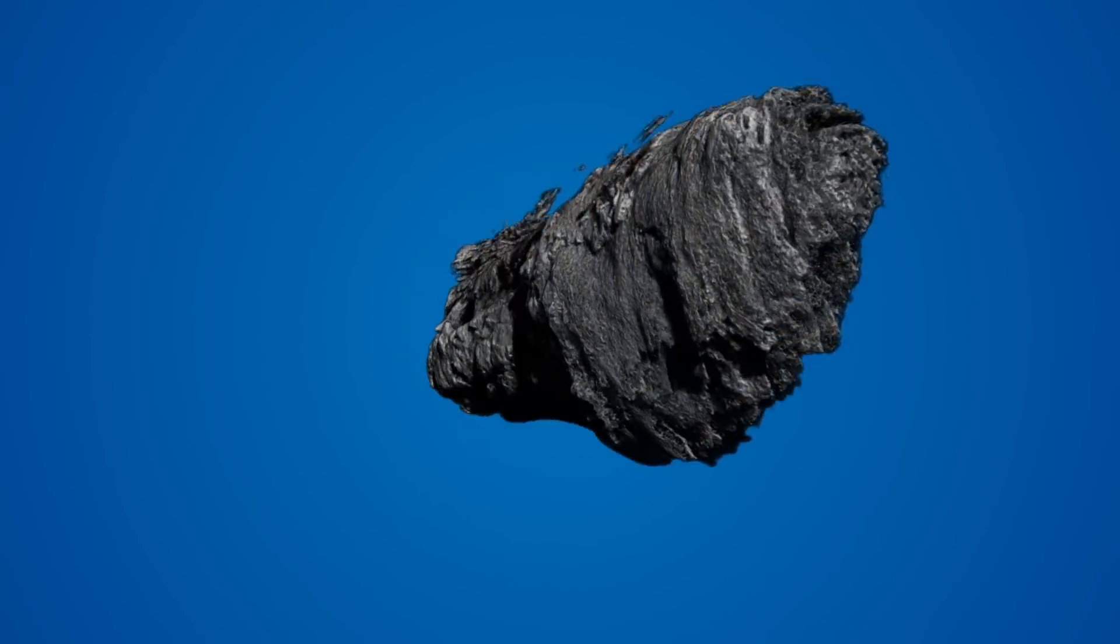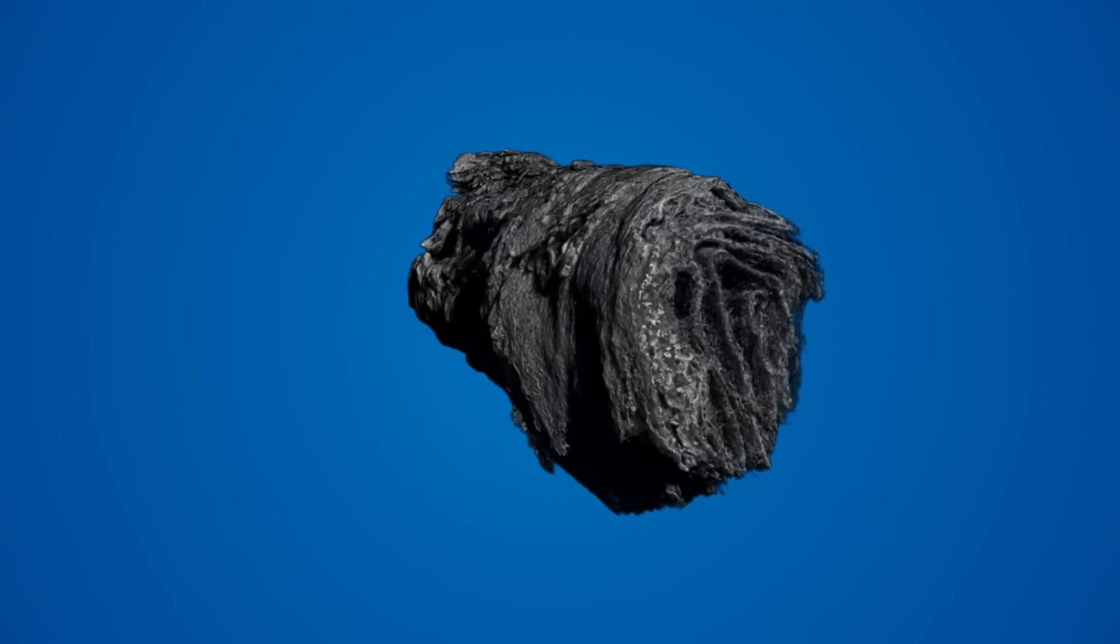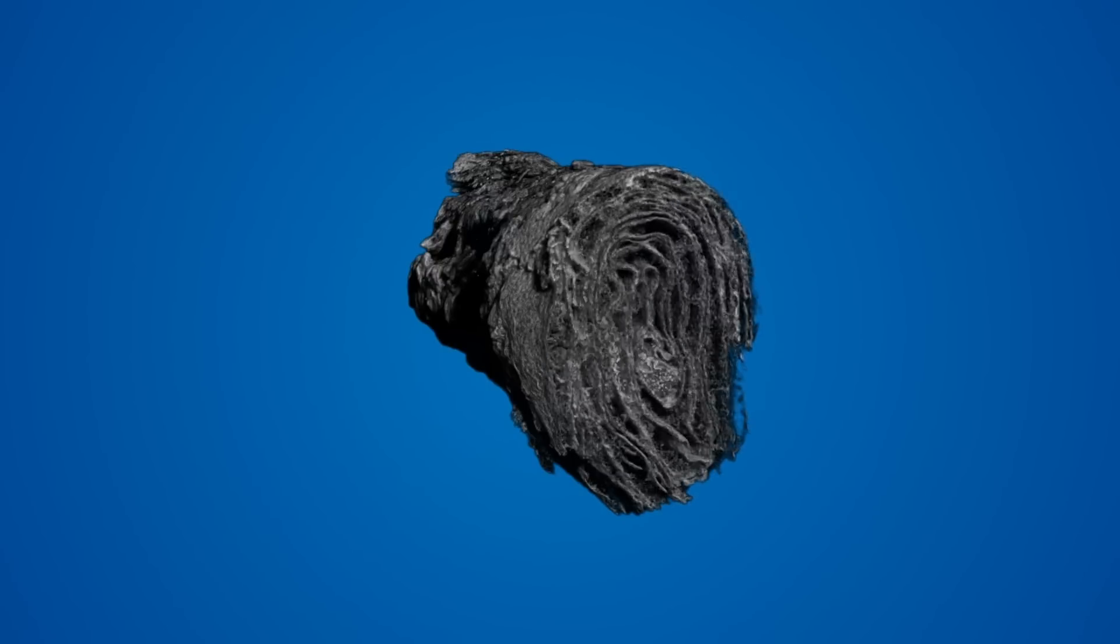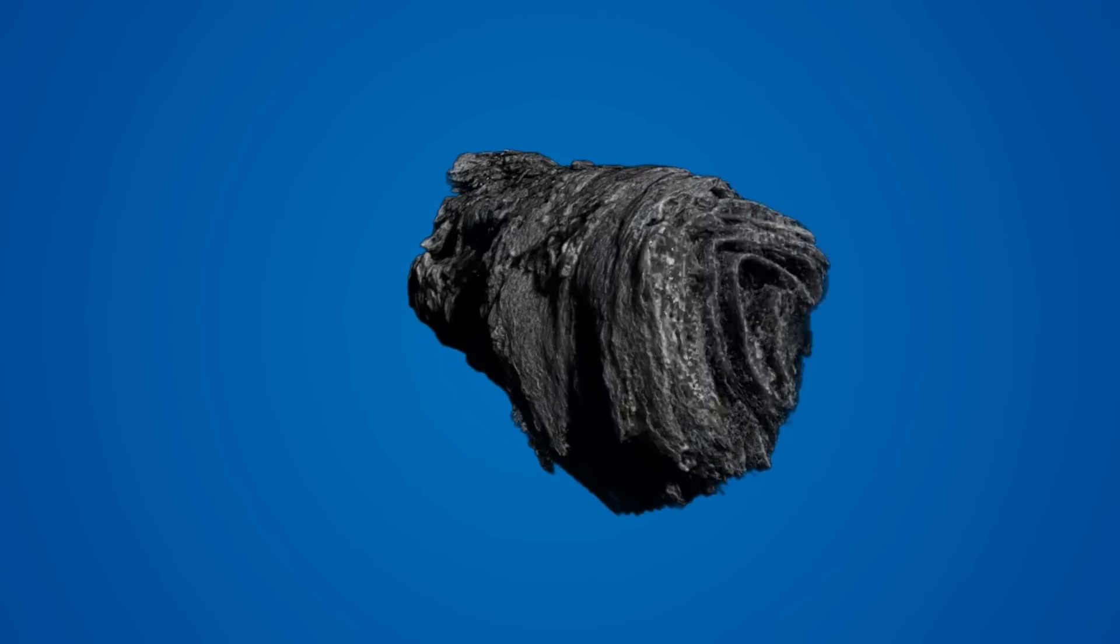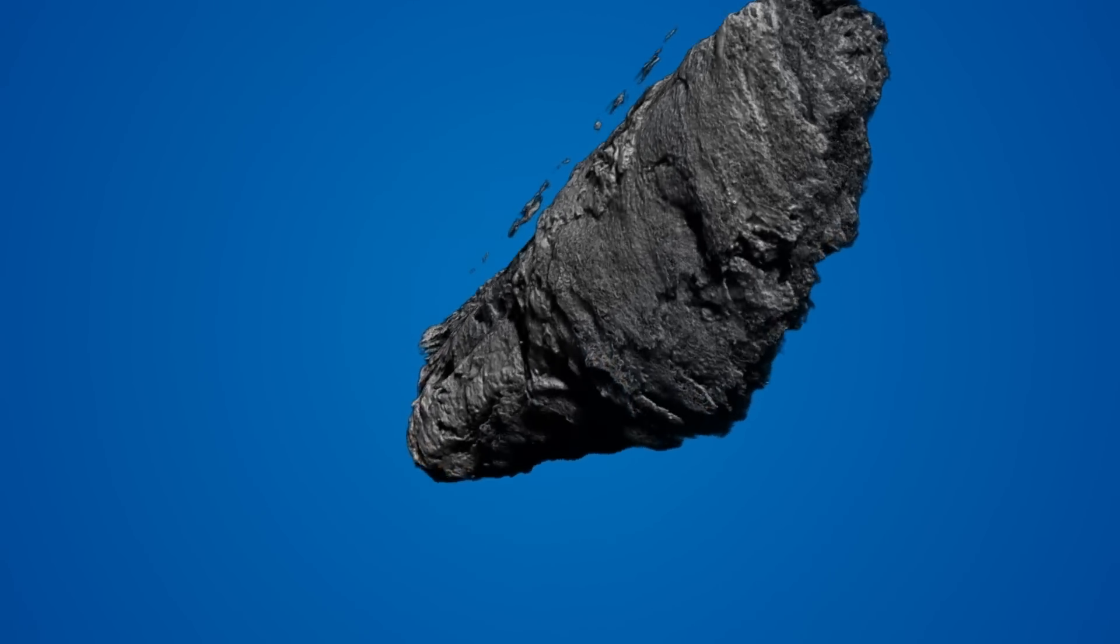When viewed as a 3D object, one can clearly see the individual layers of the scroll, but any text on the surface of those layers is obscured from view. In order for a readable version of the scroll to be produced, these images must be passed through our virtual unwrapping pipeline.